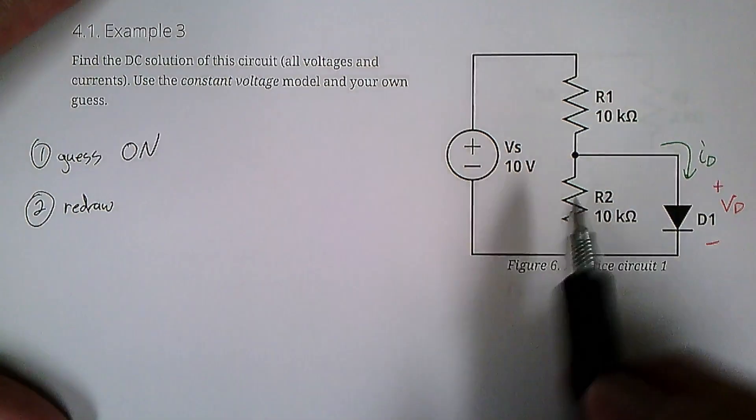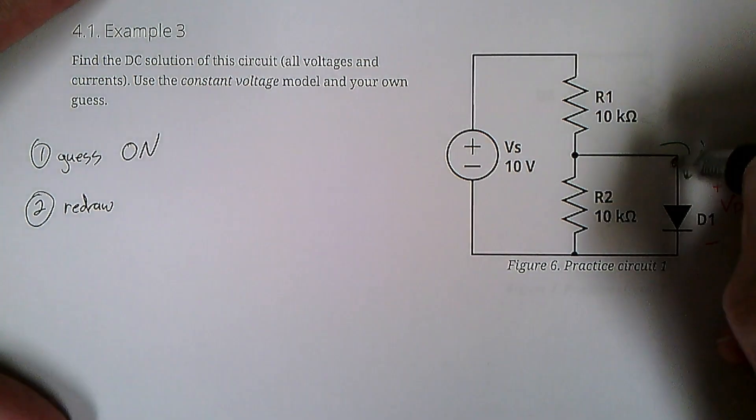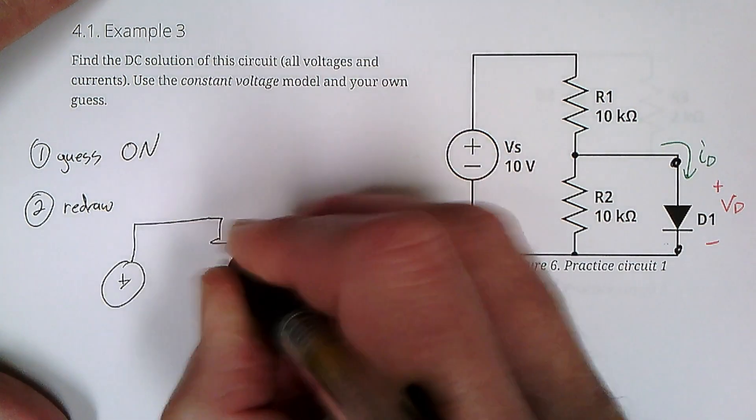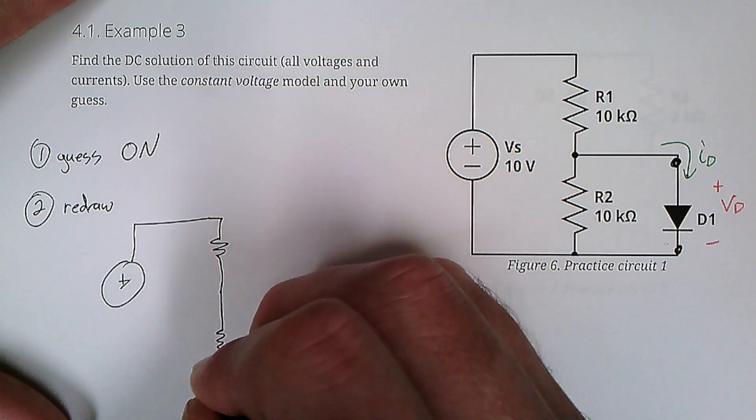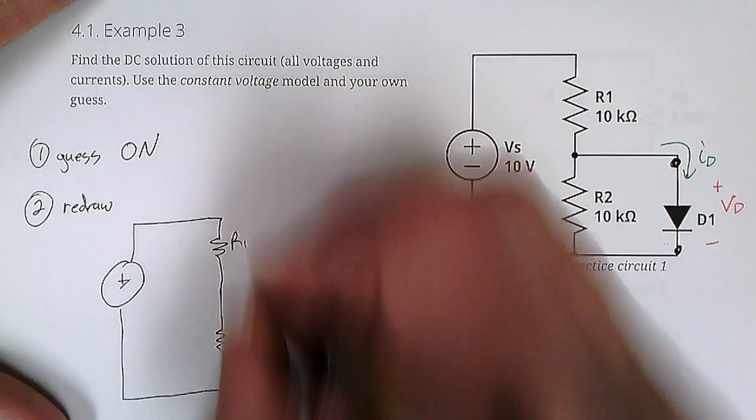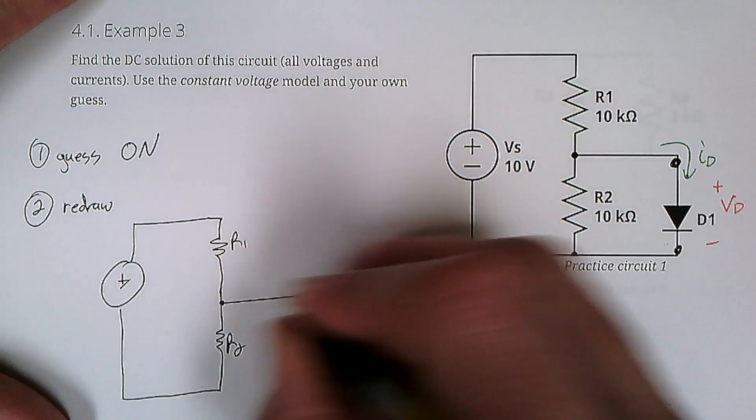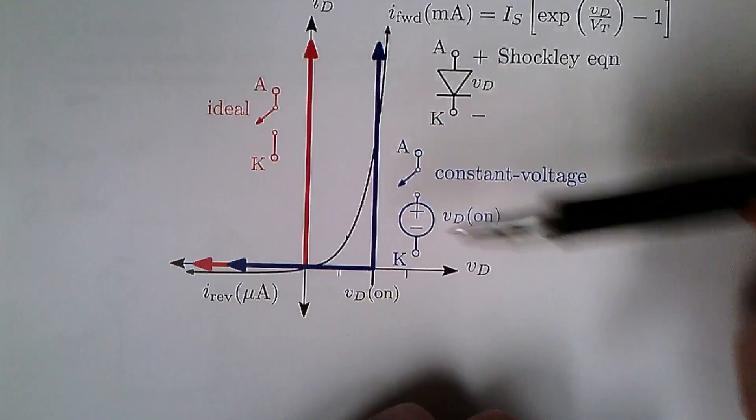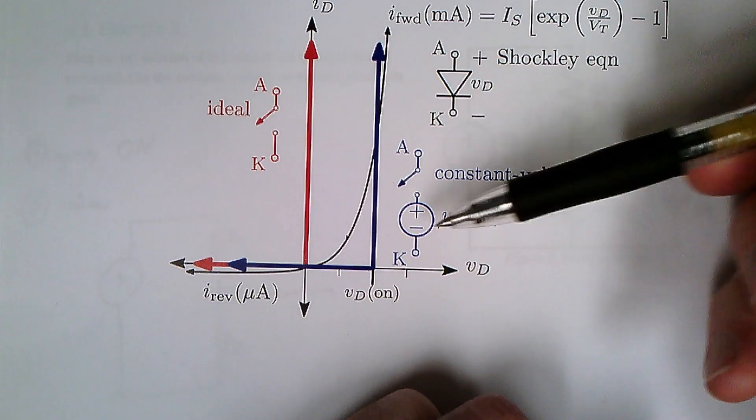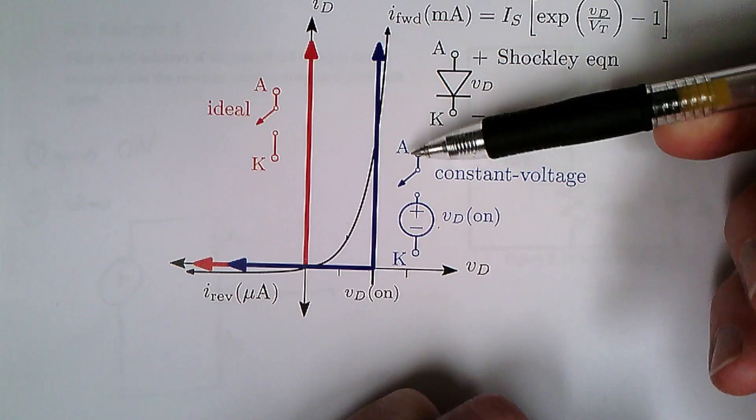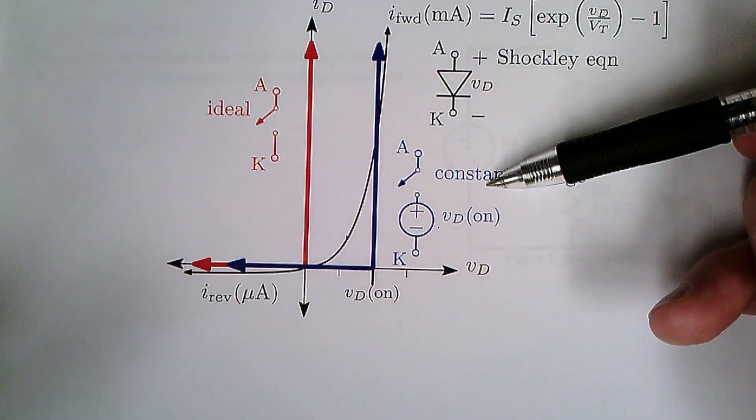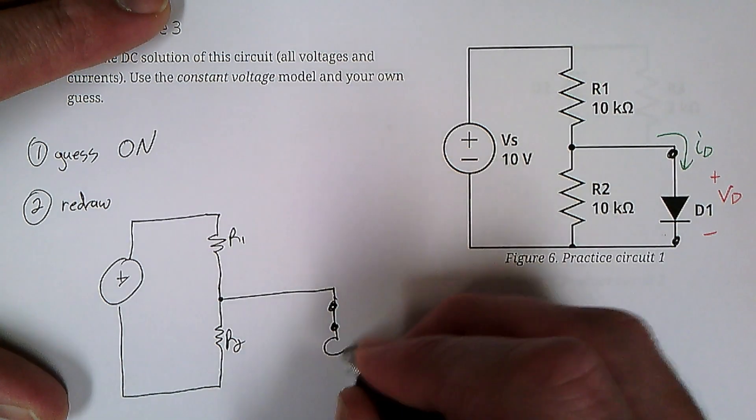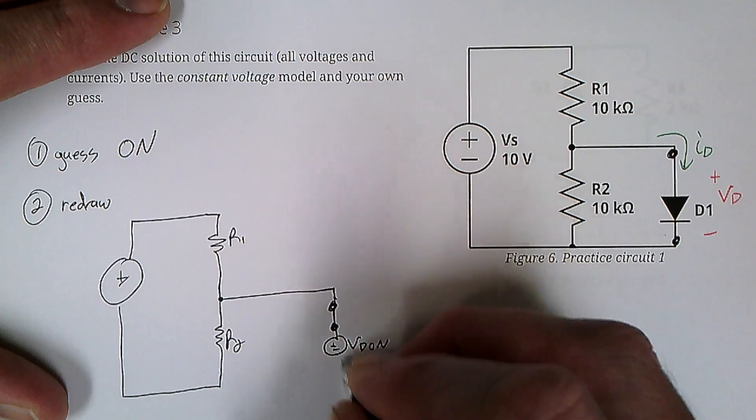Redraw the circuit. You redraw the circuit by swapping out the diode symbol for the model inside. Resistor, the resistor, and now here we're going to add the constant voltage model, which is a switch in series with a VD on.